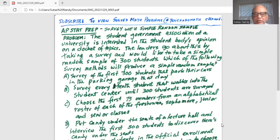Choice A: survey of the first 300 students that park their cars in the parking garage that day. Choice B: survey every student that walks into the student center until 300 students are surveyed.